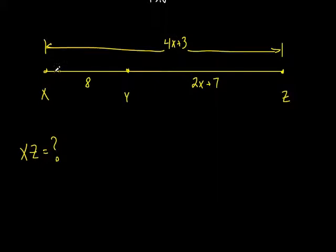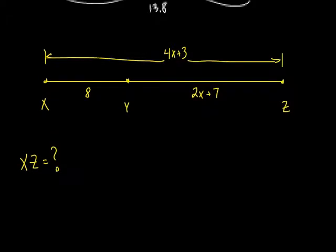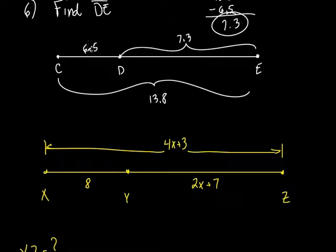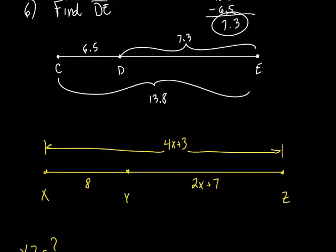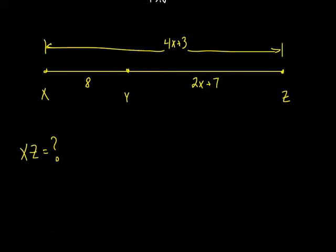Let's look at what's going on. Look at this little segment — it's basically what we did earlier. What was true about 6.5 and 7.3? They added up to be 13.8. Look here — it's pretty much the same thing, except you don't know exactly. You know one part which is 8, and you know the other part which is 2X plus 7. They add up to equal 4X plus 3. A lot of people keep saying they just equal — no, they add up to equal 4X plus 3.